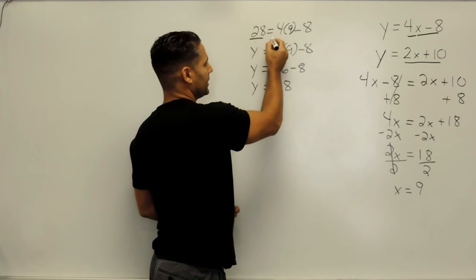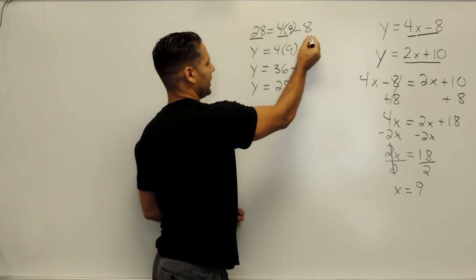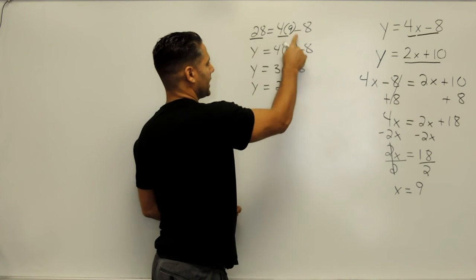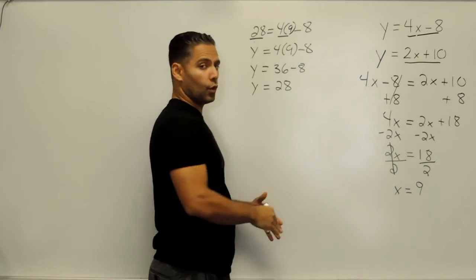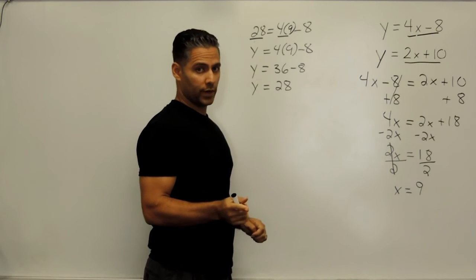So we want to see if 28 is equal to 4 times 9 minus 8. Well, 4 times 9 is 36, and 36 minus 8 is 28. So we already know that the first equation is true.